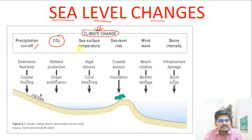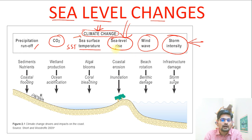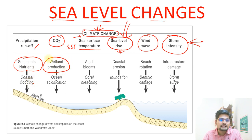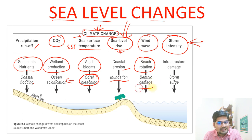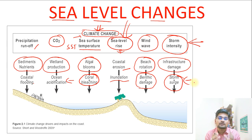Those attributes include precipitation or runoff, CO2 levels, sea surface temperature (SSTs), sea level rise, wind wave, and storm intensity — all importantly related to climate change. Focusing on sea level rise, how does it impact the various attributes related to the coastal area? First, it is linked with sediments and nutrients, directly related to coastal flooding. Then wetland production is impacted by ocean acidification. Algal blooms are directly related to coral bleaching, coastal erosion leads to inundation, beach rotation is linked to benthic damage, and infrastructure damage is related to storm surge and cyclones.